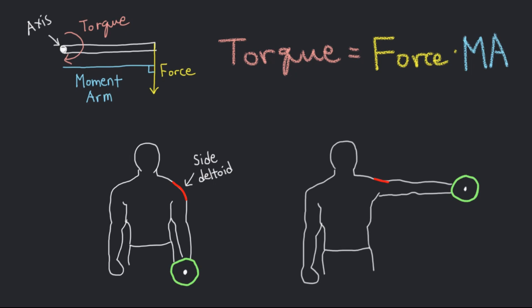Every movement in a human body generates torque, so understanding the idea of torque is critical if you want to analyze and optimize the exercises you perform. Torque is simply the rotating effect of a force — it measures how much a force acting on an object can cause it to rotate.